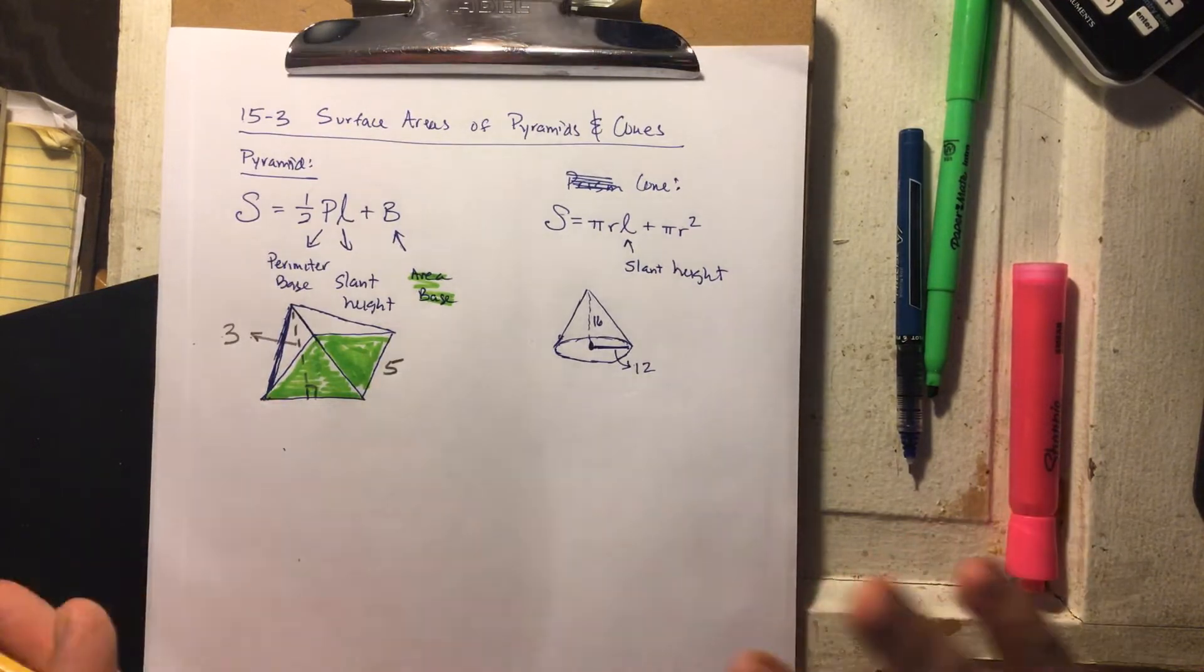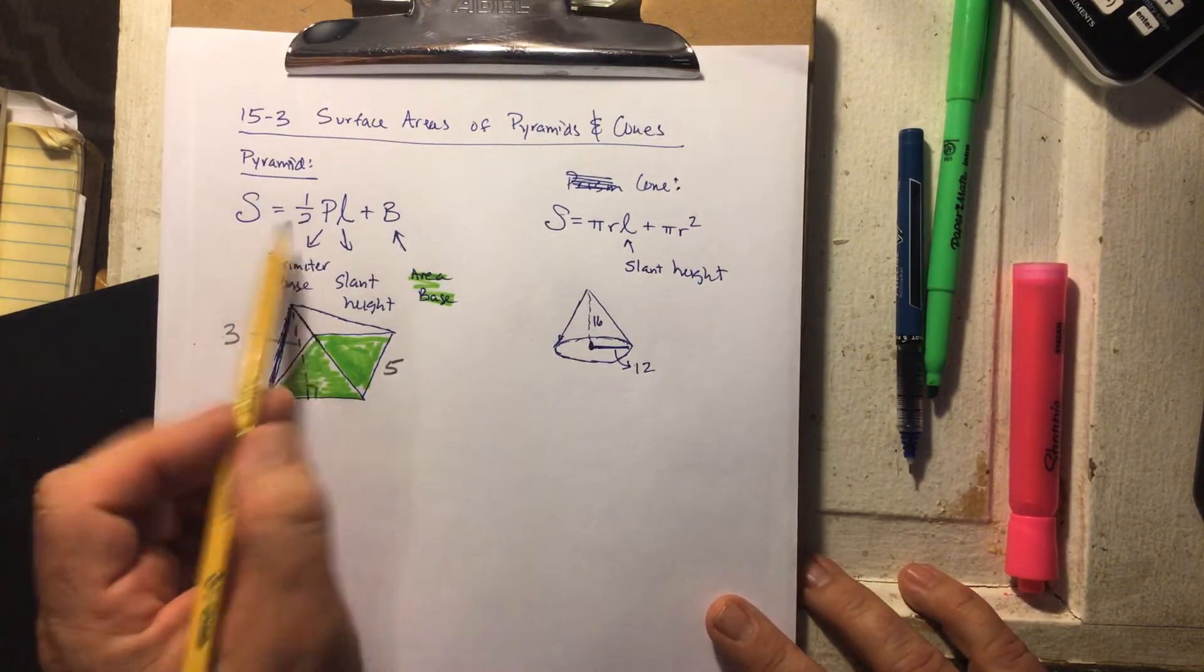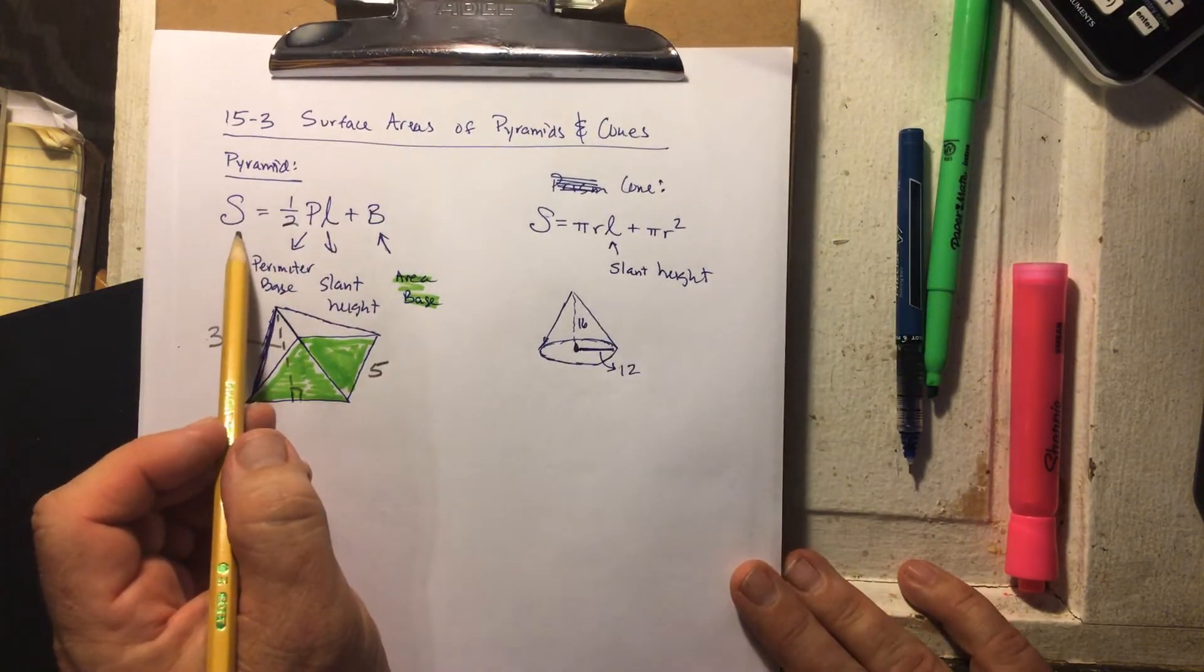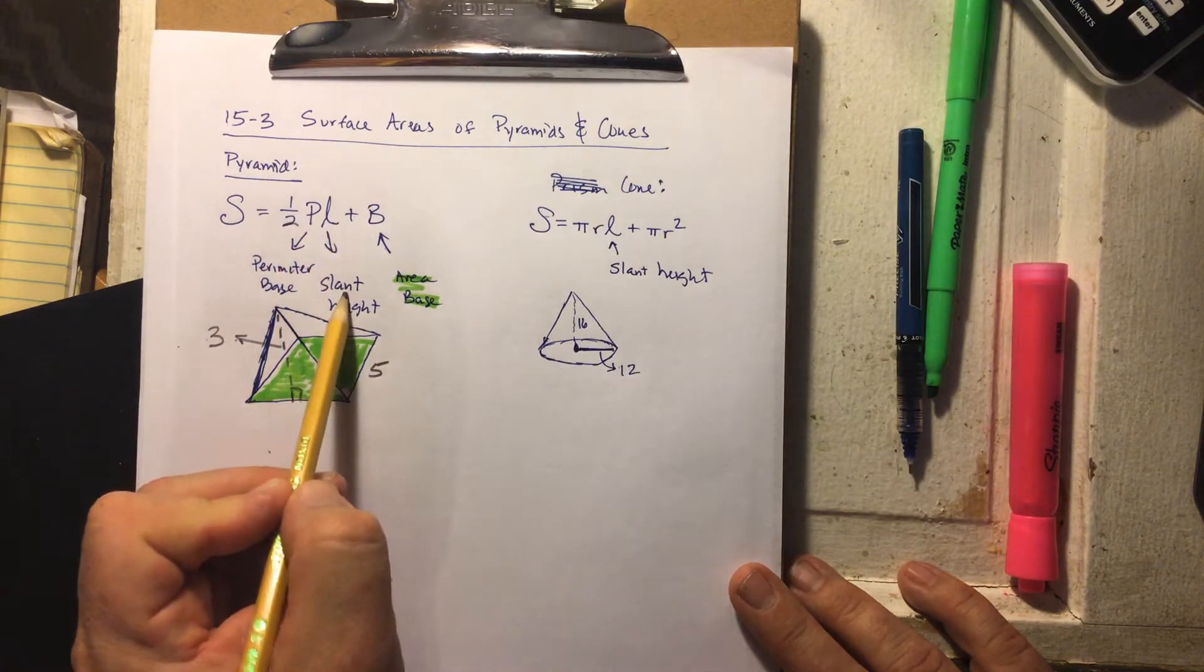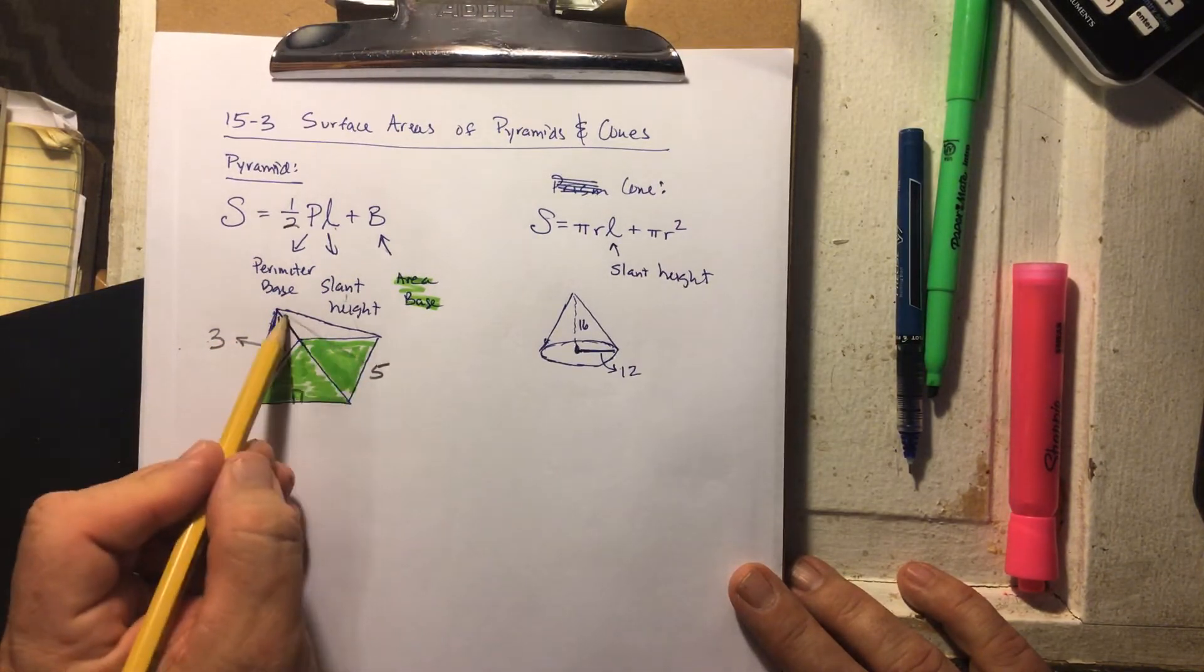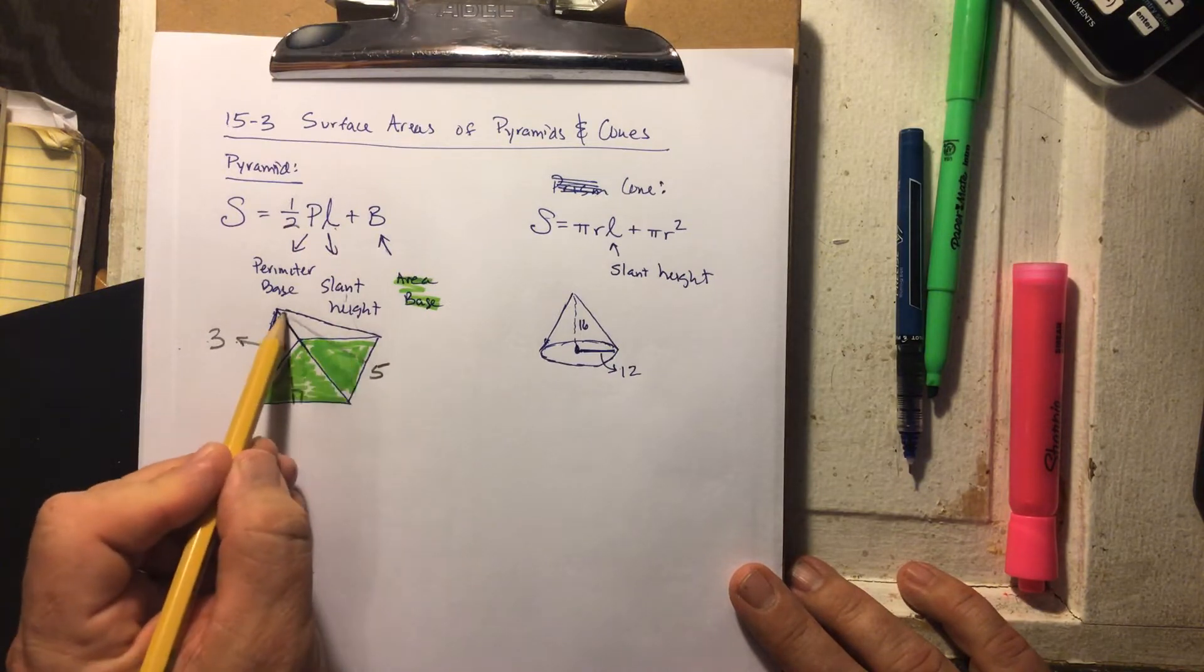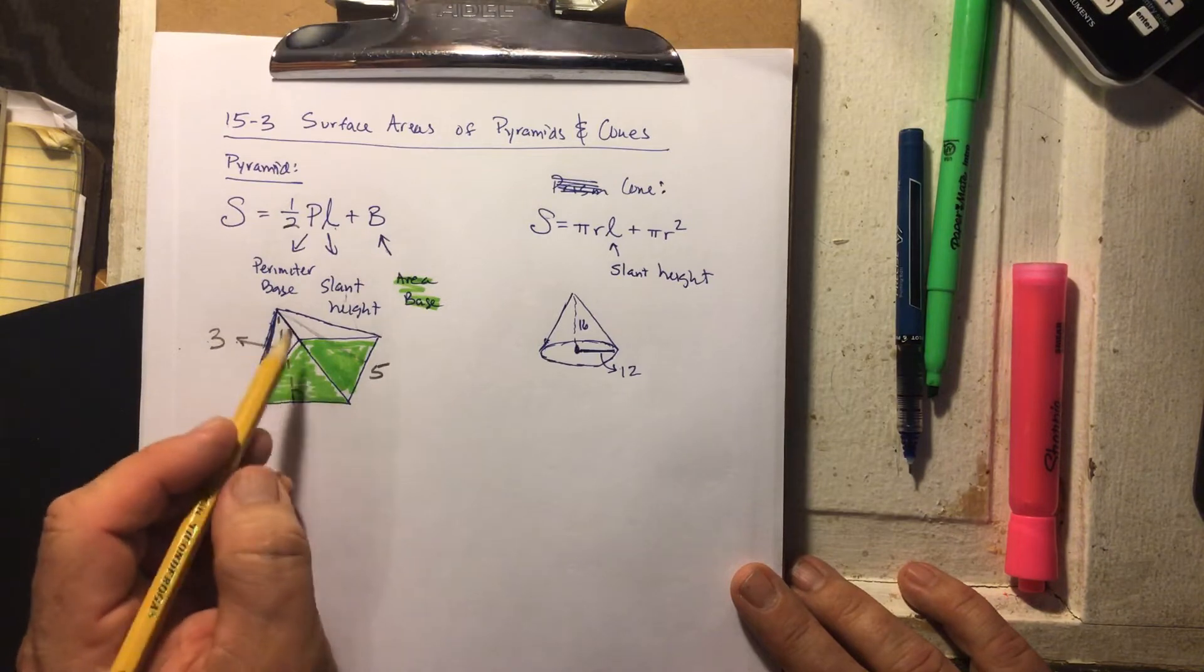So formulas. Surface area of this guy is one half times the perimeter times the slant height. It's not the length, it's slant height. So it's the side here where it's slanting this way, from the middle up to the top on just the side. Make sure that you understand that piece.